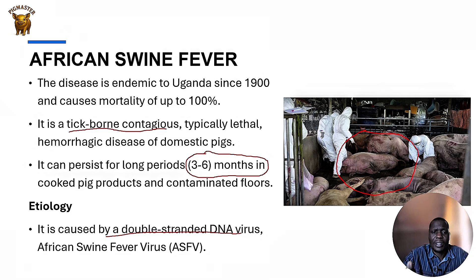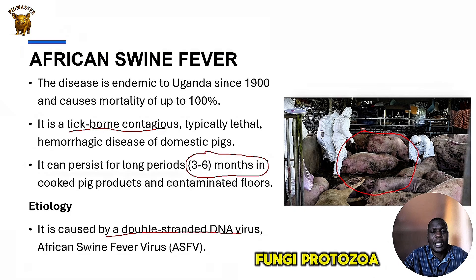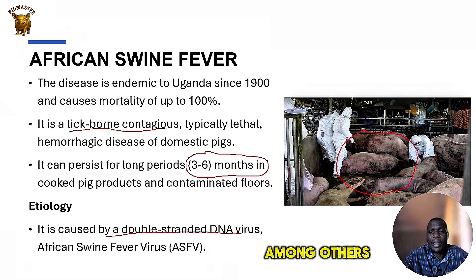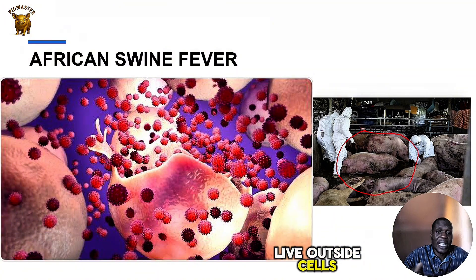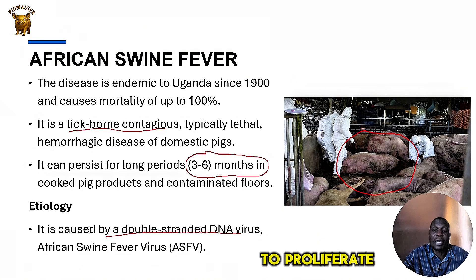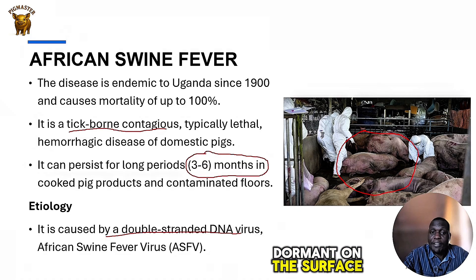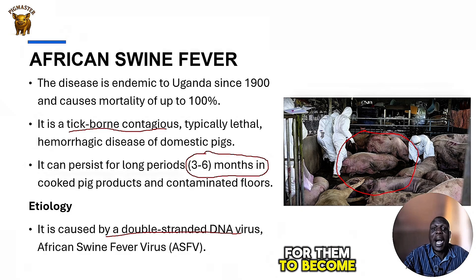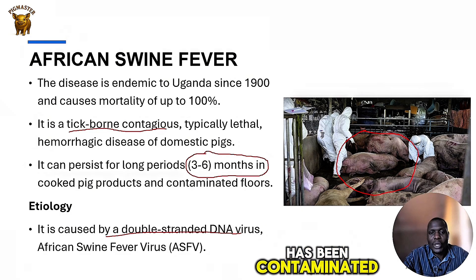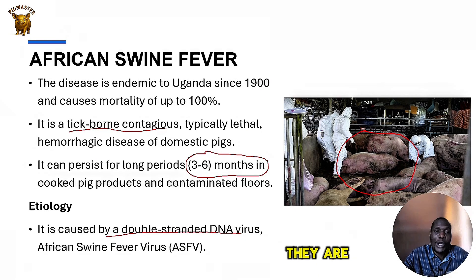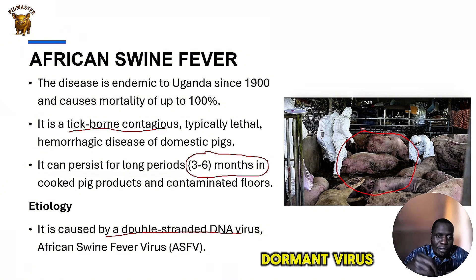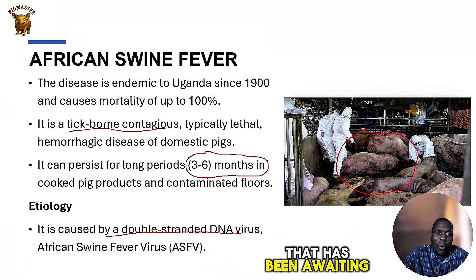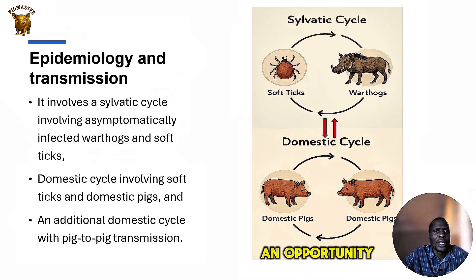Viruses have a different mode of operation unlike other pathogens like bacteria, fungi, and protozoa. Viruses don't live outside cells — they need cells to reproduce and proliferate. They can remain dormant on a surface, waiting for a conducive environment to become active. So when your floor has been contaminated and you introduce new pigs, they are going to be affected by the dormant virus that has been awaiting such an opportunity.